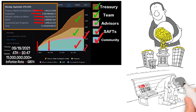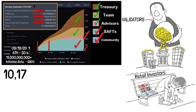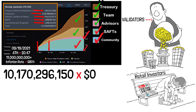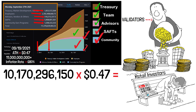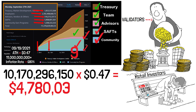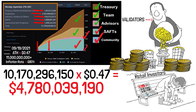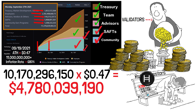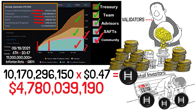If I just add up those top four categories, you would see that 10,170,296,150 coins were dumped out into the system, most likely to the richest of the rich. That means when HBAR put in its all-time high, the VCs, team members, and ivory tower elites could have dumped $4,780,039,190 worth of HBAR out into the open market, dumping on retail investors, probably without ever needing to touch any of their initial investment.